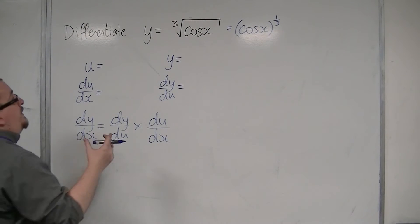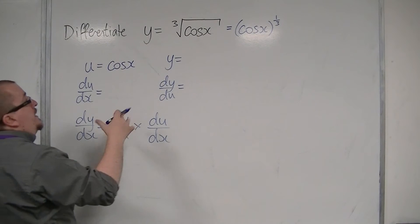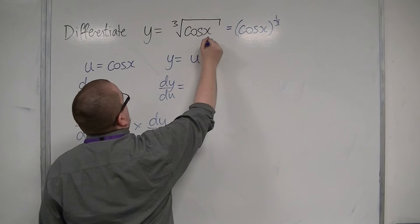So u in this case will be cos x, and y will be u to the power of a third.